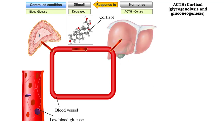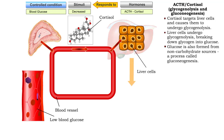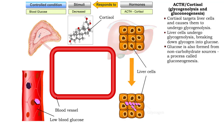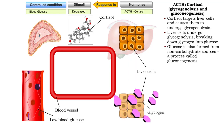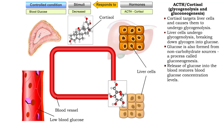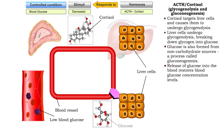Cortisol targets liver cells and causes them to undergo glycogenolysis, a process that breaks down glycogen into glucose. It also promotes the formation of glucose from non-carbohydrate sources, a process called gluconeogenesis. The glucose is released into the blood and blood glucose concentration is restored to normal levels.